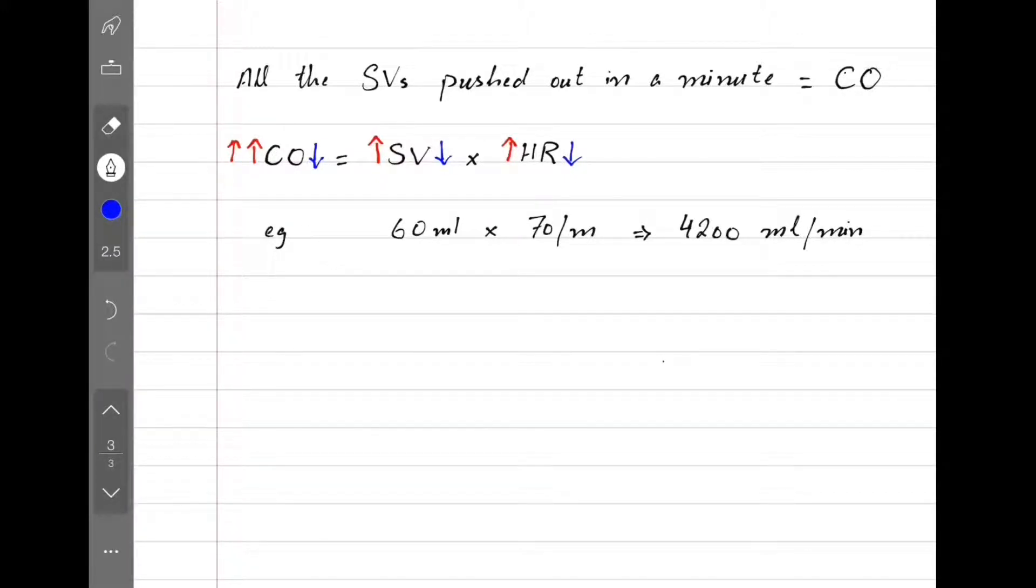To understand it better, let's see what happens during exercise. Exercise does two things. One of these is activation of sympathetic autonomic nervous system, which brings about three changes of its own. Number one: it increases the heart rate by increasing the pacemaker activity. We just saw that increasing the heart rate increases cardiac output, but remember this increase in heart rate is within physiologic limits.